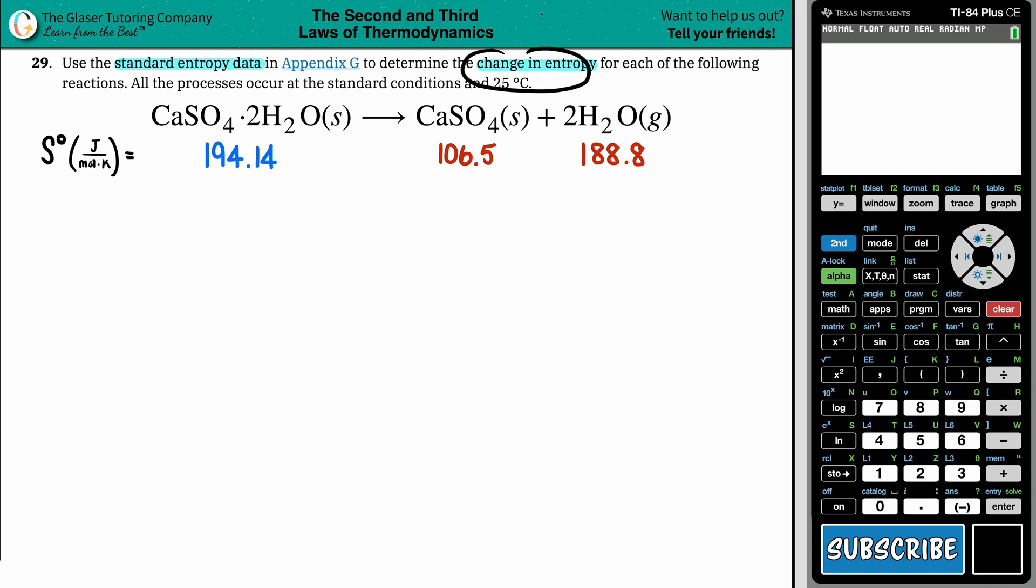So in this case, we just want to find that change in entropy. Keep in mind that the change in entropy is always a delta sign, that's the triangle. And entropy is an S value. So we're solving for delta S. Now, since we're using those standard values in the back of a textbook, in this case they're saying it's Appendix G, but it could be a different appendix in your textbook. Since we're using standard values, we're solving for a standard change in entropy. So that's delta S°.